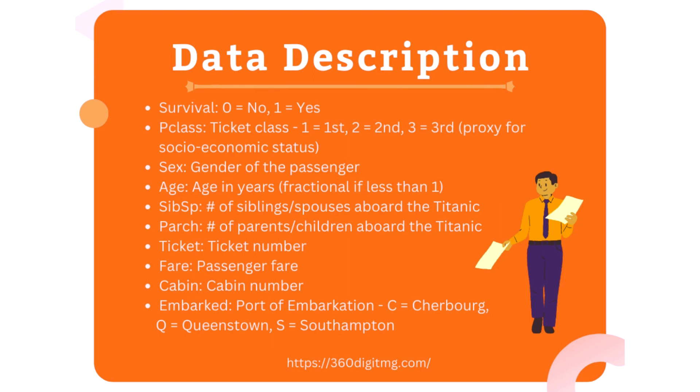Let's become familiar with the dataset. The Titanic dataset consists of 891 rows and 12 columns. This table provides the definition of each variable in the dataset, helping us understand the meaning of each column. Some columns have additional notes — for example, PClass indicates the passenger ticket class, which serves as a proxy for socioeconomic class.